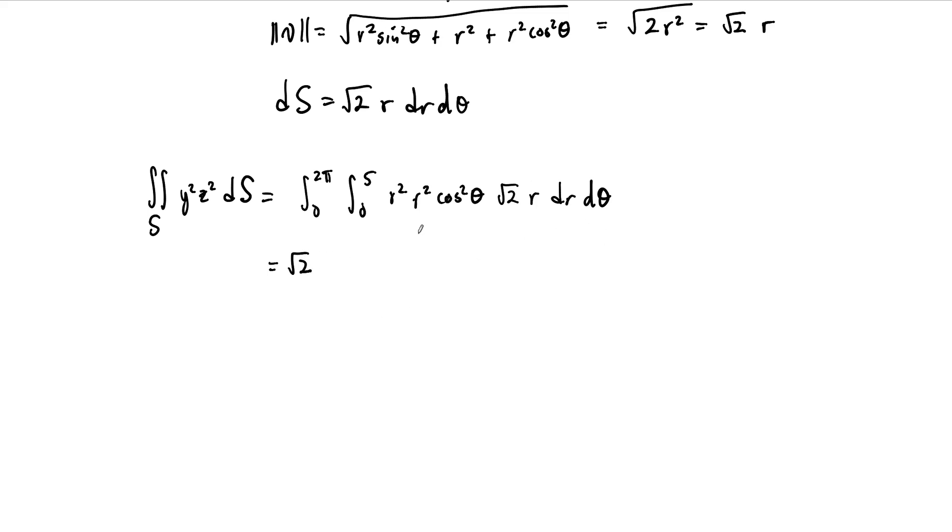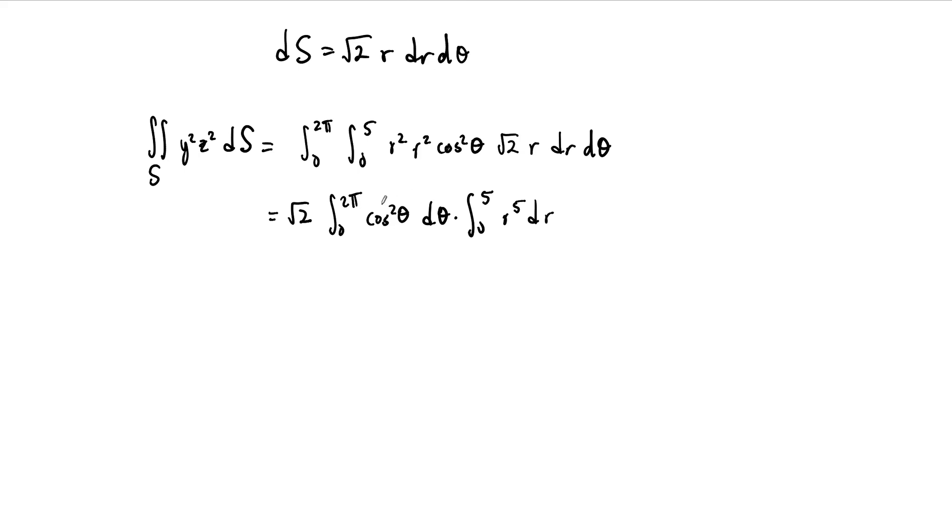And then we just have to work this out. So square root of 2 can come out. This integral is separable, the integral from 0 to 2 pi of cosine squared theta d theta, times the integral from 0 to 5 of r to the 5th dr. This requires a trig identity—power reducing or double angle formula. It's got different names, or at least I call it different names. So this becomes square root of 2 over 2, integral from 0 to 2 pi of 1 plus cosine of 2 theta d theta.